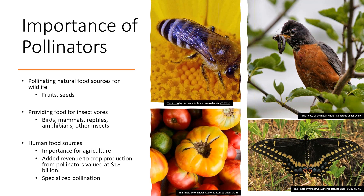Pollinators are critically important. They provide natural food sources for wildlife by pollinating plants, which produces fruits and seeds to feed on. They themselves are food for insectivores — birds, mammals, reptiles, amphibians, and other insects. Studies show that caterpillars are a crucial food source for young nestlings to aid in their development. They're also important for our food sources and extraordinarily important for agriculture. The added revenue to crop production from pollinators is currently valued at 18 billion dollars.